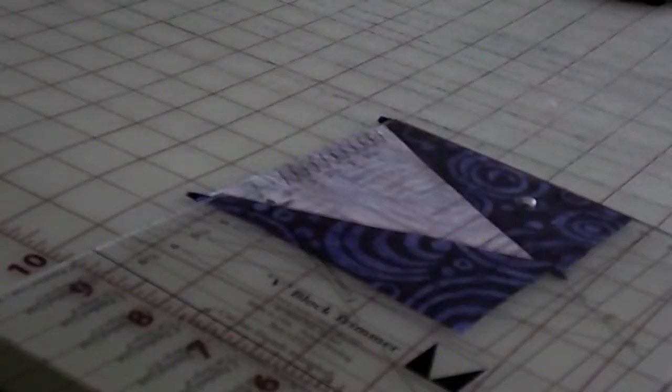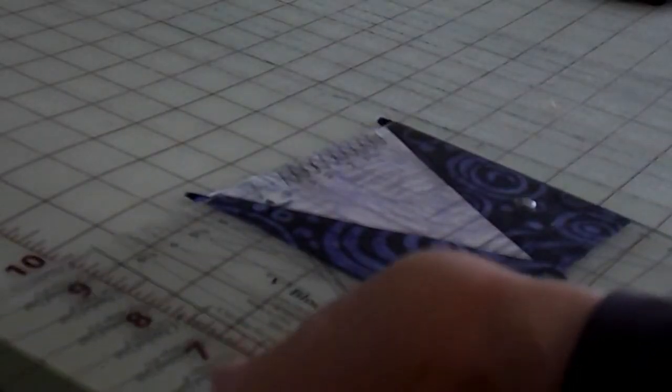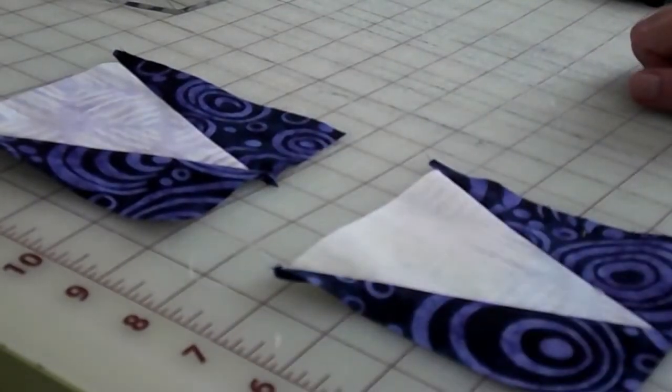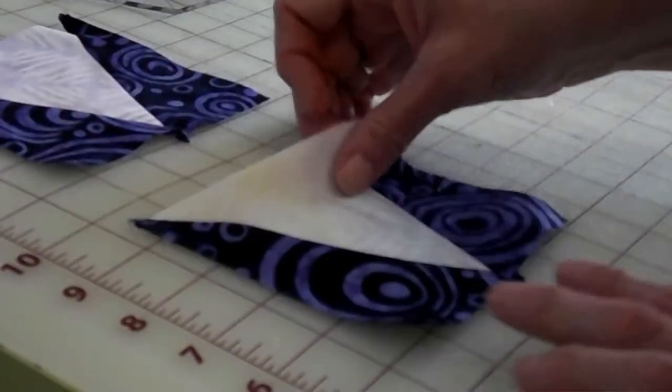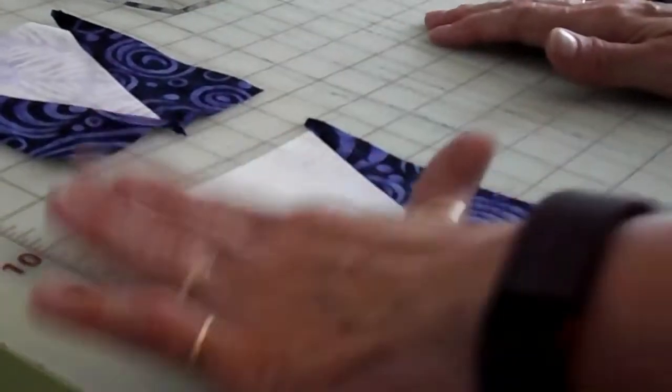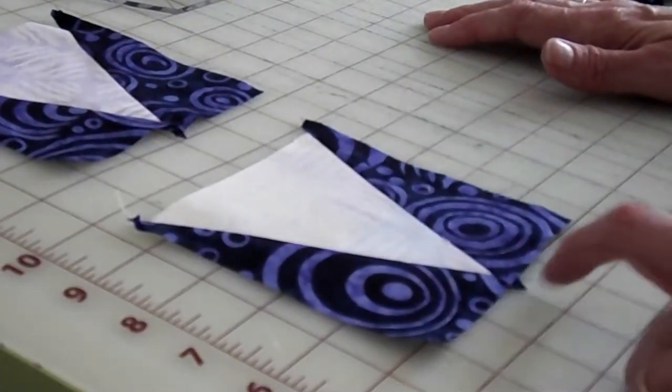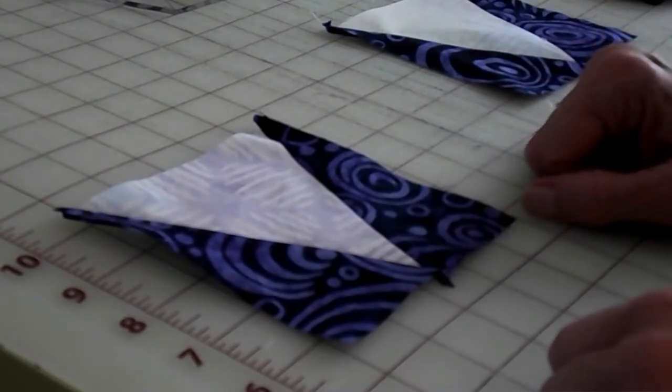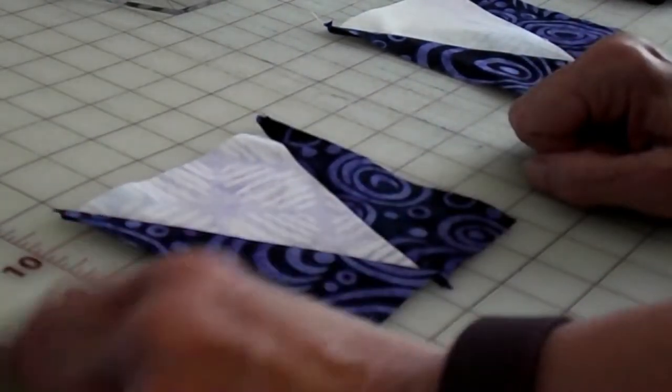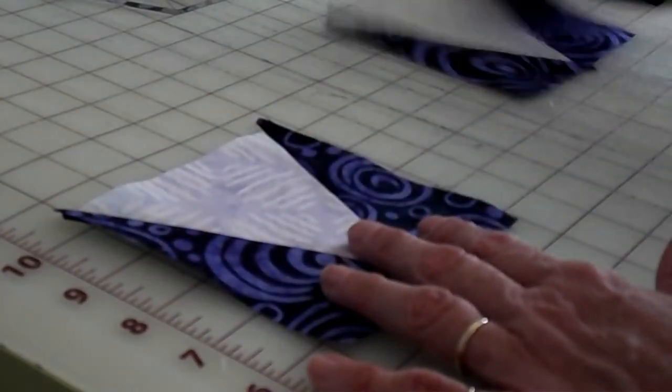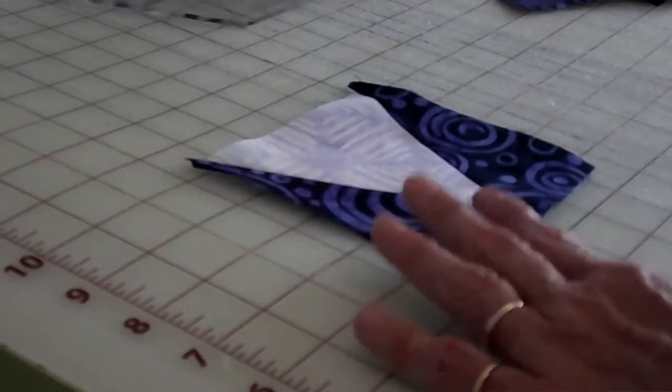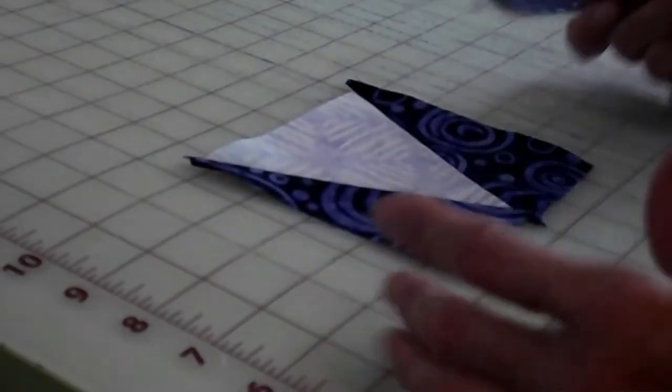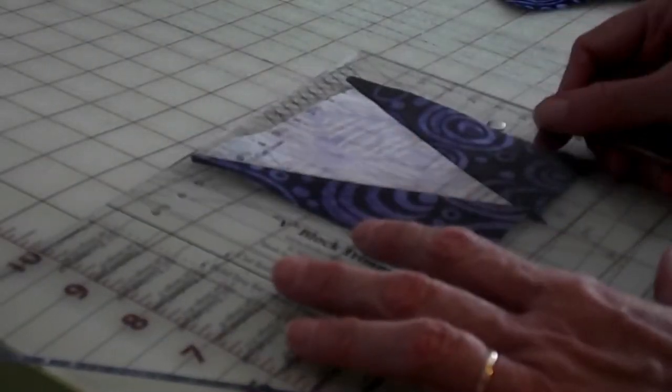We're continuing on with Mystical Prism Block 3, and I wanted to show you my blocks before I started cutting. Here is one that's pretty well perfect. This little edge is nice and straight, but we're working with bias and sometimes that little edge isn't straight. My block is sort of tilted to the side, but I wanted to show you the magic of the trimmer.